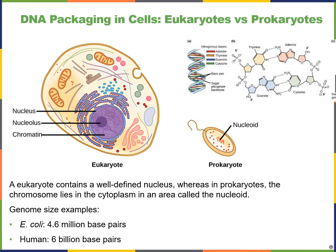We've seen this before when we first examined eukaryotic and prokaryotic cells. Eukaryotes have a nucleus, and that's where we find most of our DNA, although there is also DNA found in our mitochondria. In prokaryotes, in contrast, they do not have a nucleus, so their DNA is found in an area within the cytoplasm known as the nucleoid.